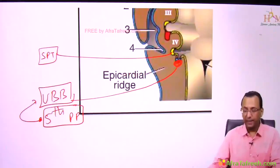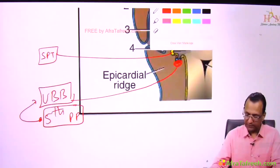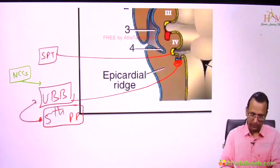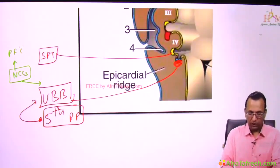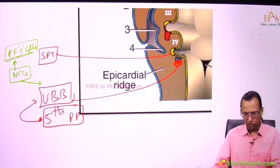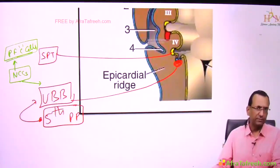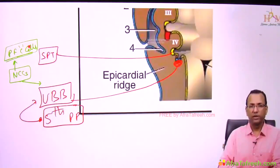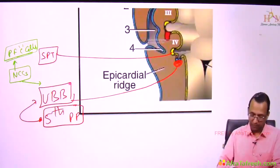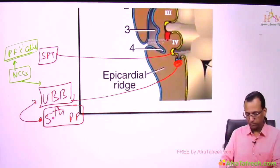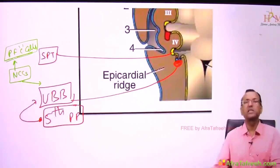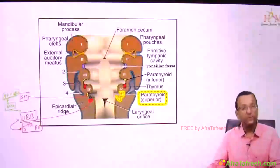The importance of the ultimobranchial body attaching to the 4th pouch is that it will receive neural crest cells. When the neural crest cells come to the ultimobranchial body, they will change into parafollicular C cells of the thyroid — the cells that produce calcitonin. So the story involves neural crest → ultimobranchial body → 4th pouch → 5th pouch as the priority of answers.